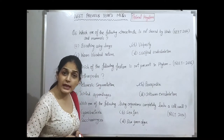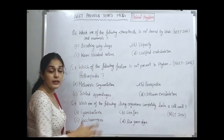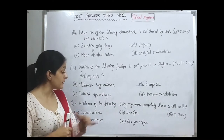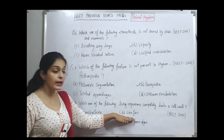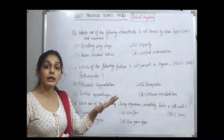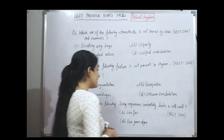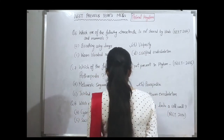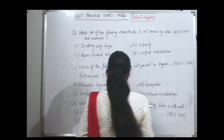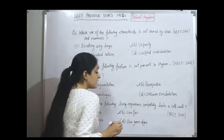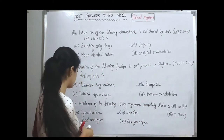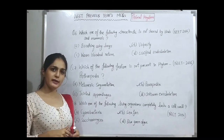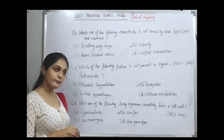The next question asks which of the following living organisms completely lacks a cell wall. Mycoplasma (Mycoplasma) completely lacks a cell wall. Cyanobacteria, Saccharomyces, and blue-green algae all have cell walls. So the correct answer is Mycoplasma, which completely lacks a cell wall.